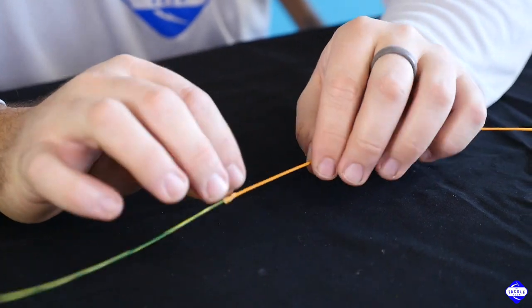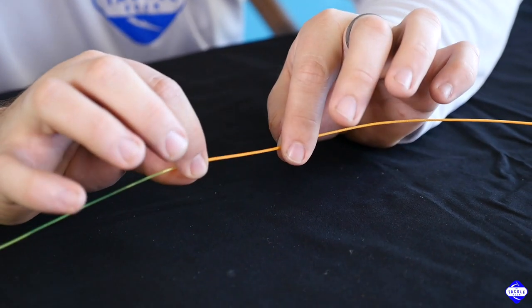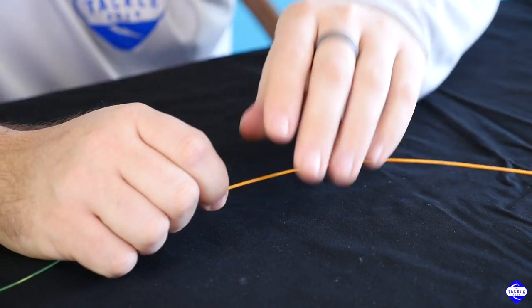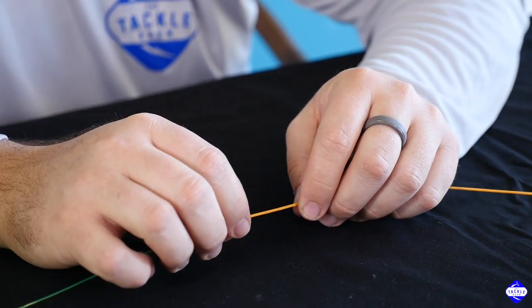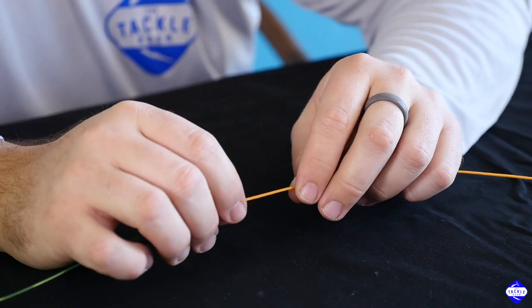A couple other simple ways is some people also would just glue this connection right here too. This right here doesn't hold any strength. It's actually the braid that does all the work. All you're doing with the glue or with the floss is just keeping this part from fraying. That's all there is to splicing.